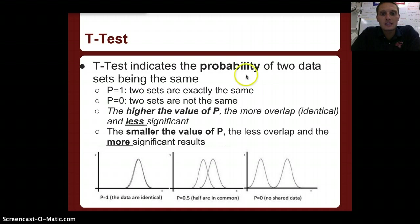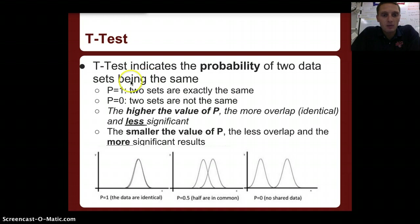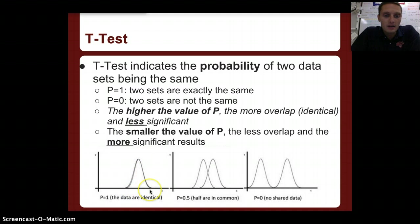A t-test indicates the probability of two data sets being the same. If we have two different data sets, a t-test will tell us the probability of how closely related or connected those are. We measure probability on a scale of 1 to 0 in statistics — 1 meaning the two sets are exactly the same, and 0 meaning they are not the same. If our p-value equals 1, and we graph our two different data sets, these two data sets are going to overlap, shown here as a bell curve distribution.